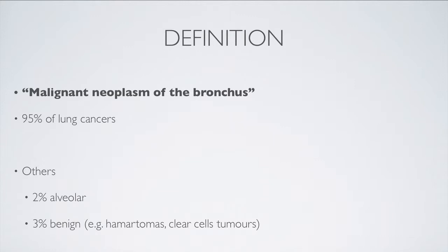Let's start with some really basic definitions. 95% of lung cancers are malignant neoplasms of the bronchus, and that's a really good definition. However, it's important to be aware of some other types. About 2% of lung cancers can be alveolar, and about 3% can be benign. Examples of benign tumours include hematomas and clear cell tumours.